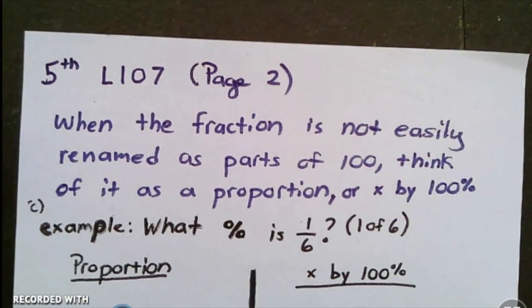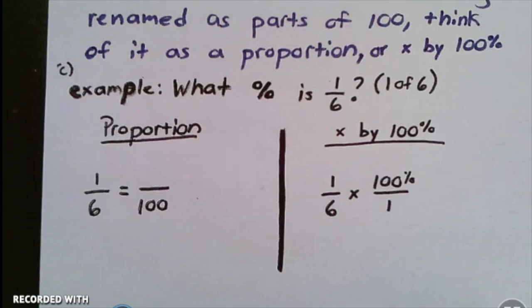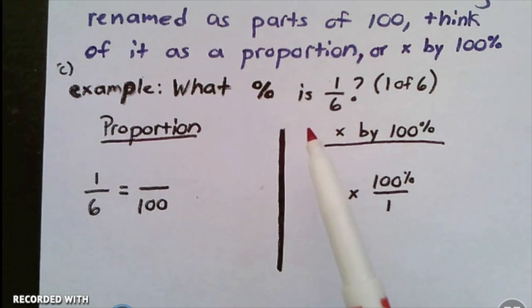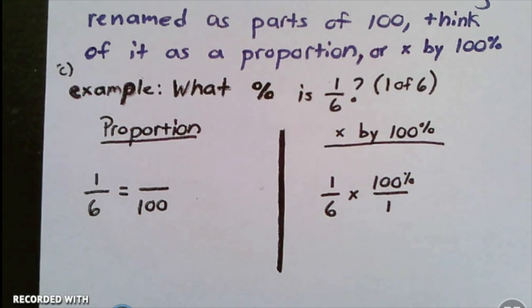Sometimes though, a fraction is not easily renamed as a part of 100, so you need to think of it as a proportion or multiply by a hundred percent. Here we go: what percent is 1/6? This is asking 1 of 6, so I'm going to start by writing this as a fraction: 1 over 6. That's the part, that's the whole. Now I want to rename it so it has a denominator of 100. How can I do this? Well, nothing times 6 is 100, so I have to use a different strategy.